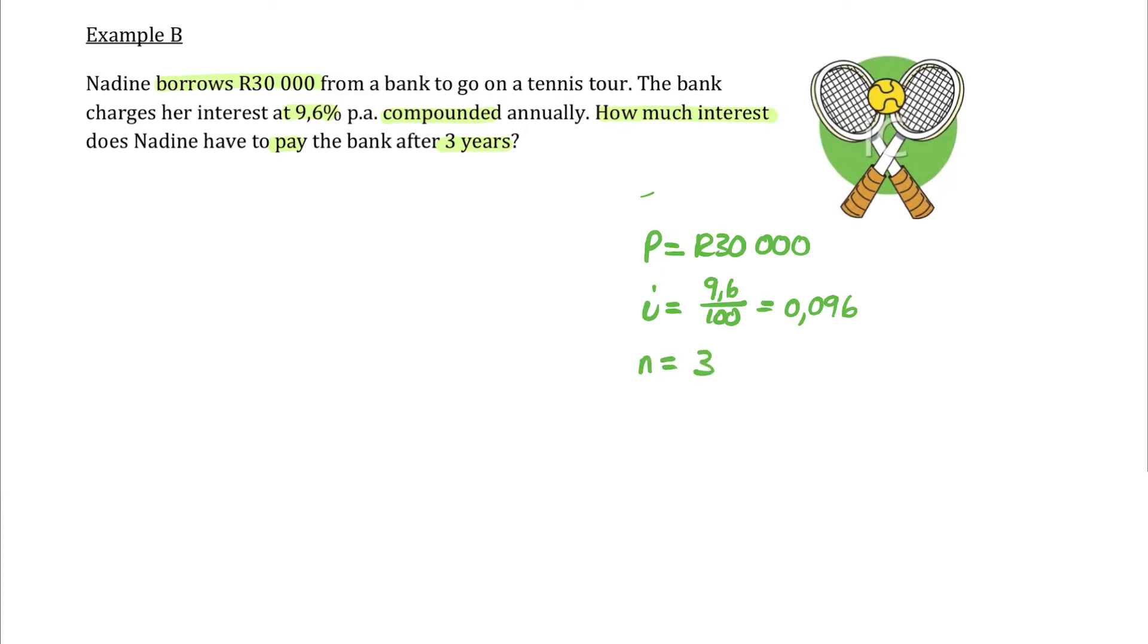The three years, well, we know that's the end value. But now they're looking at only the interest that Nadine has to pay. Well, we want compound interest, but there's no formula that gives us compound interest in one step with P, I, and N. We have to find the total amount of her loan repayment. How much is she going to have to pay back this bank after three years? Then the compound interest is going to be her repayment minus her initial loan. The difference between the two is the interest that she's paid.